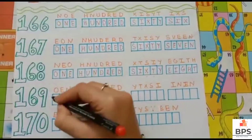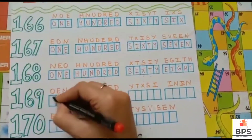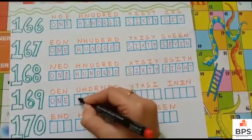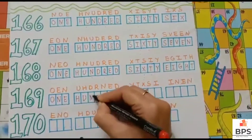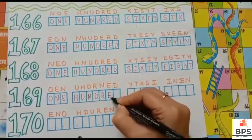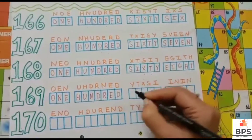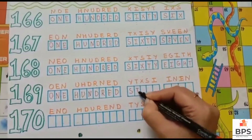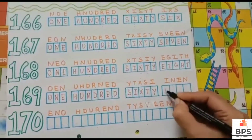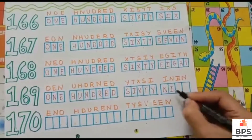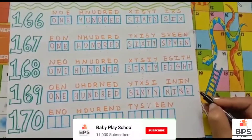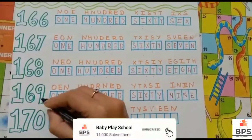One hundred sixty nine. 169. O-N-E, one. H-U-N-D-R-E-D, hundred. S-I-X-T-Y, sixty. N-I-N-E, nine. One hundred sixty nine.